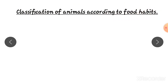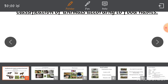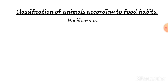Food habits are not the same in all animals. For example, a cow eats grass, a lion eats flesh. We are human beings — we eat both plants and animal products. So in this class, we learn about classification of animals according to food habit.